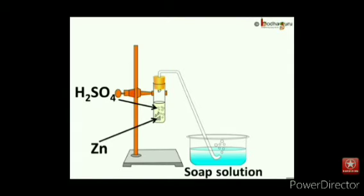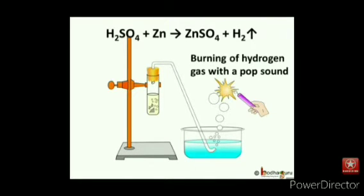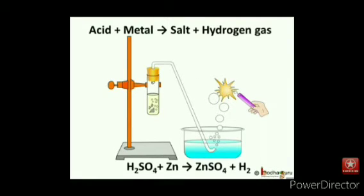If we pass this gas through a soap solution, some bubbles would be formed. If we take a burning candle near a bubble, the gas would start burning with a pop sound — it is hydrogen gas. This hydrogen gas is produced because the metal displaced hydrogen from the acid. The metal combines with the remaining part of the acid and forms a compound called salt. This is a displacement reaction, as zinc is more reactive than hydrogen, so it displaces hydrogen from sulfuric acid.